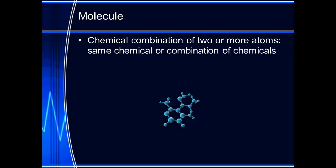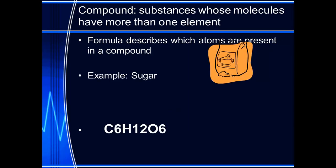A molecule is a chemical combination of two or more atoms, the same chemical or combination of chemicals. You could have a molecule of oxygen, and you could have a molecule of water, which would be a chemical combination of more than one particular type of element. A compound is substances whose molecules have more than one element.